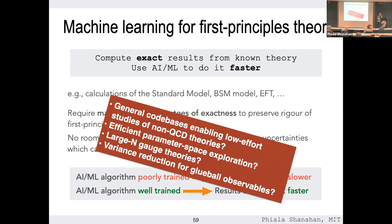On real-time problems and retarded correlation functions: contour deformation is not the solution for that. There are lots of other interesting things you can do to access real-time dynamics — most go back to the Hamiltonian formulation. Something I've been working on is trying to match between Euclidean and Hamiltonian formulations, and how you can use classical lattice calculations to match interpolating operators between the two to try to accelerate those computations. But that's a separate discussion.